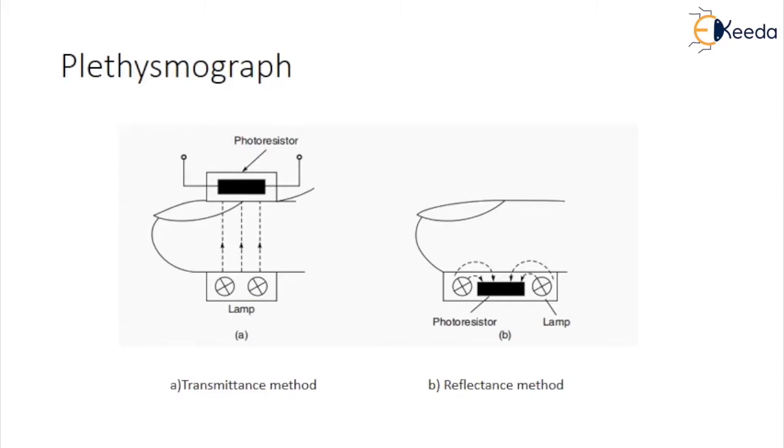The LED phototransistor plethysmograph transducer consists of gallium arsenide infrared emitting diode and phototransistor in a compact package measuring 6.25 x 4.25 x 4.75 mm. The peak spectral emission of LED is at 0.94 micrometer. The phototransistor is sensitive to radiation between 0.4 and 1.1 micrometer.